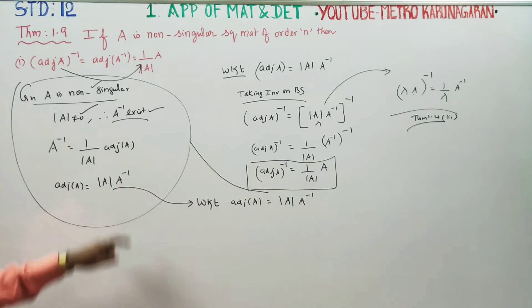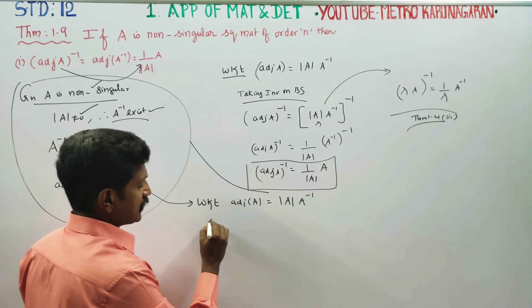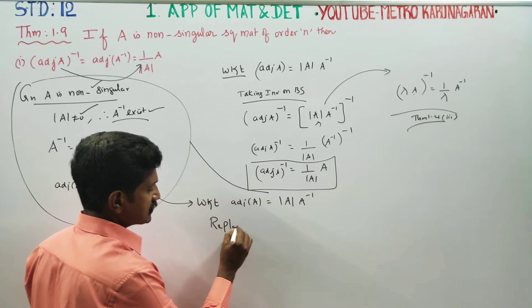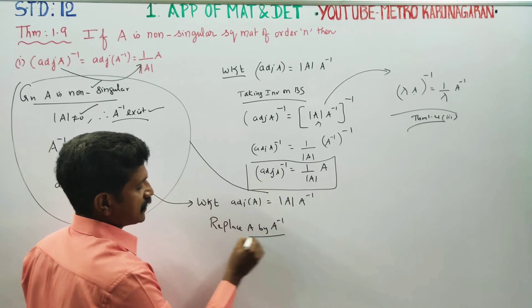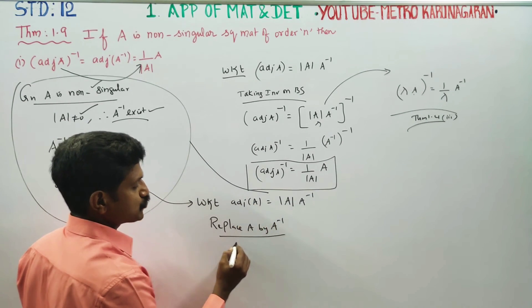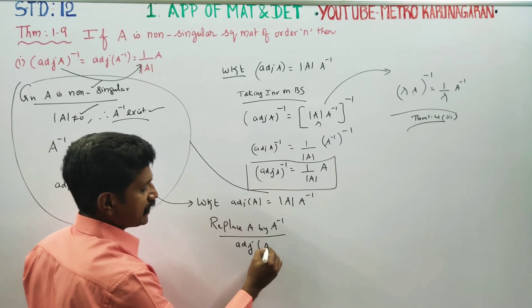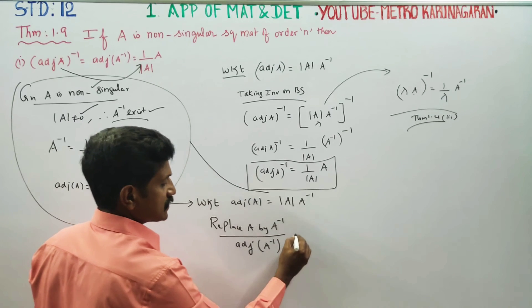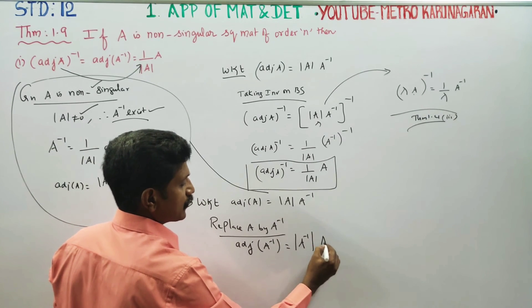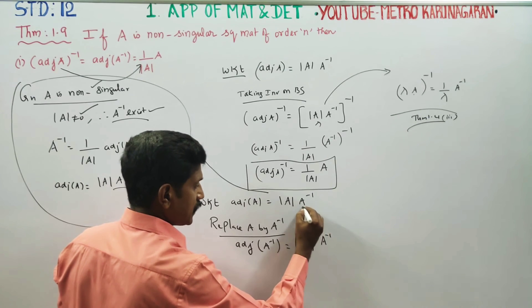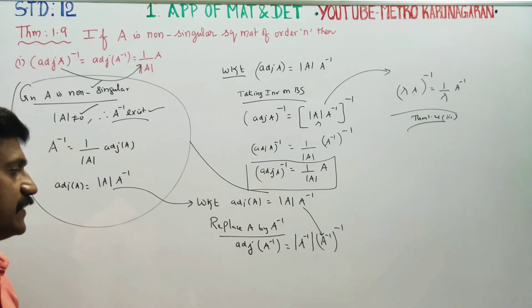I am going to replace A by A inverse. Replacing A by A inverse, adjoint of A inverse is equal to A inverse whole inverse, which equals A.